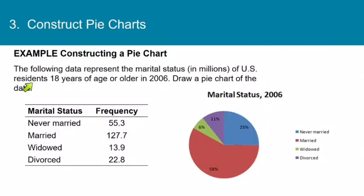So here is an example of a pie chart. The following data represent the marital status in millions of U.S. residents 18 years of age or older in 2006. Draw a pie chart of the data. Now you can see that we already have the pie chart here, so we won't really be drawing it ourselves, but we're just going to do all the calculations that would be necessary to draw one ourselves. So we've got the frequencies here, and we know that in order to calculate the number of degrees in each sector, we need to do relative frequency times 360 degrees. So we'll need to get the sum of these numbers so we can get the relative frequencies. If you add these four numbers, you find the sum is 219.7.